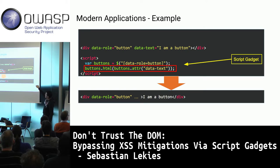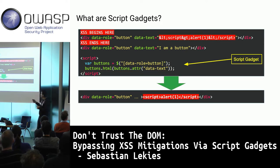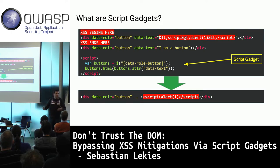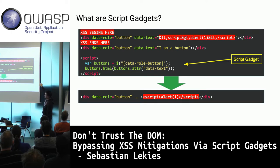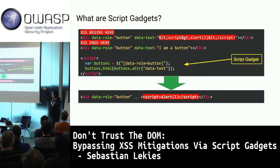Now assume we have the XSS. The attacker could try inserting a script, but the XSS mitigation blocks it. However, we can just insert a button with the same marker string and a data-text attribute containing our payload. The payload is now just data — just a string — and no XSS mitigation would be suspicious of it.